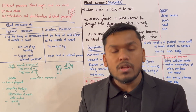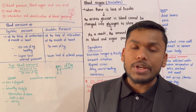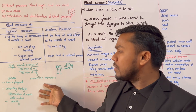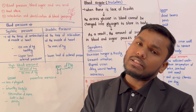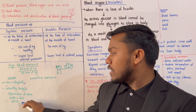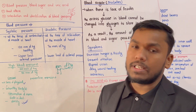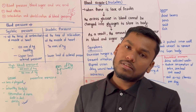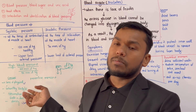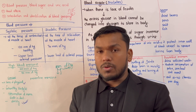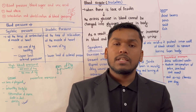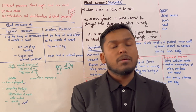To manage blood pressure, we should do physical exercise and reduce salt intake. You have to control obesity and follow a proper diet. Obesity worsens blood pressure, so reducing fat through diet and exercise helps control high blood pressure.